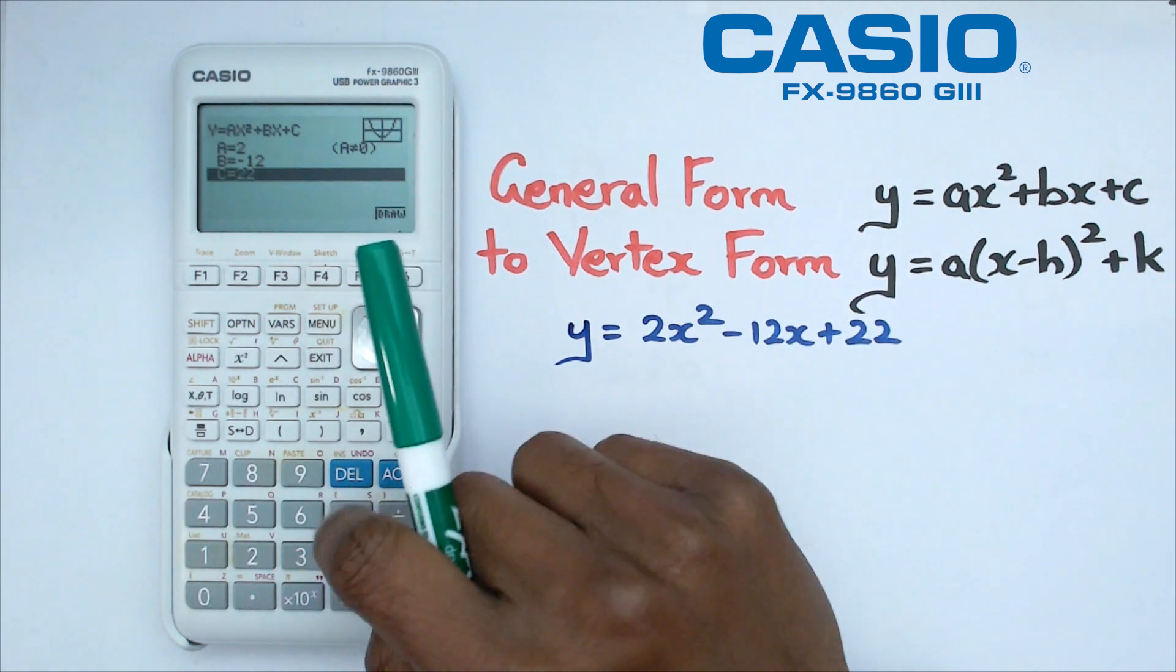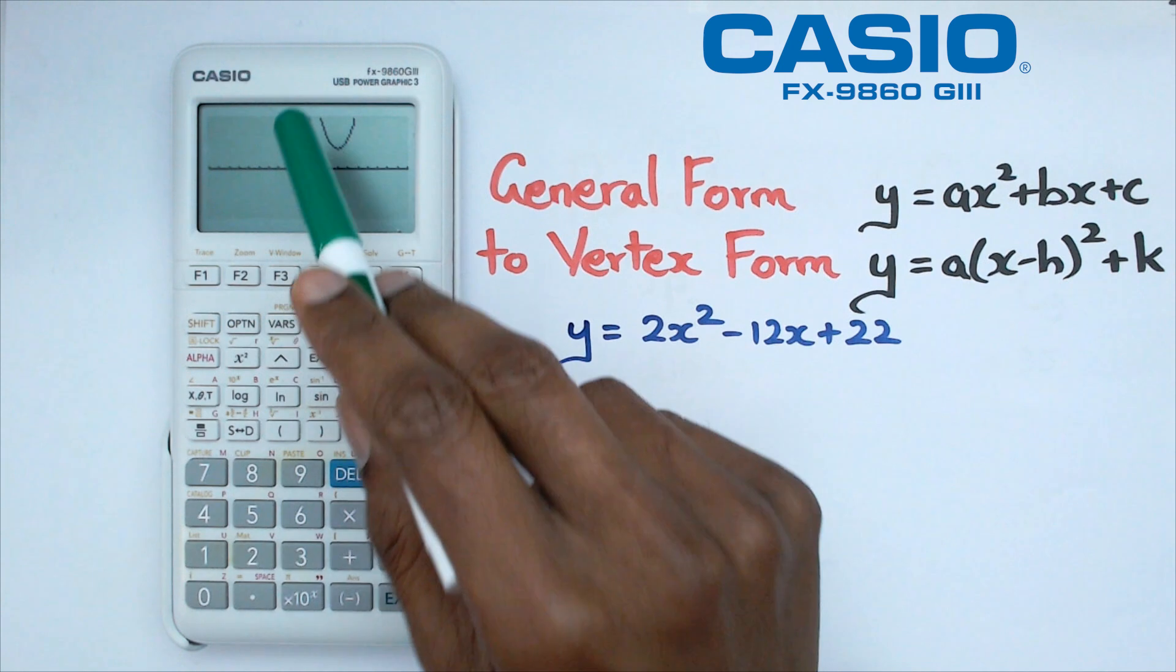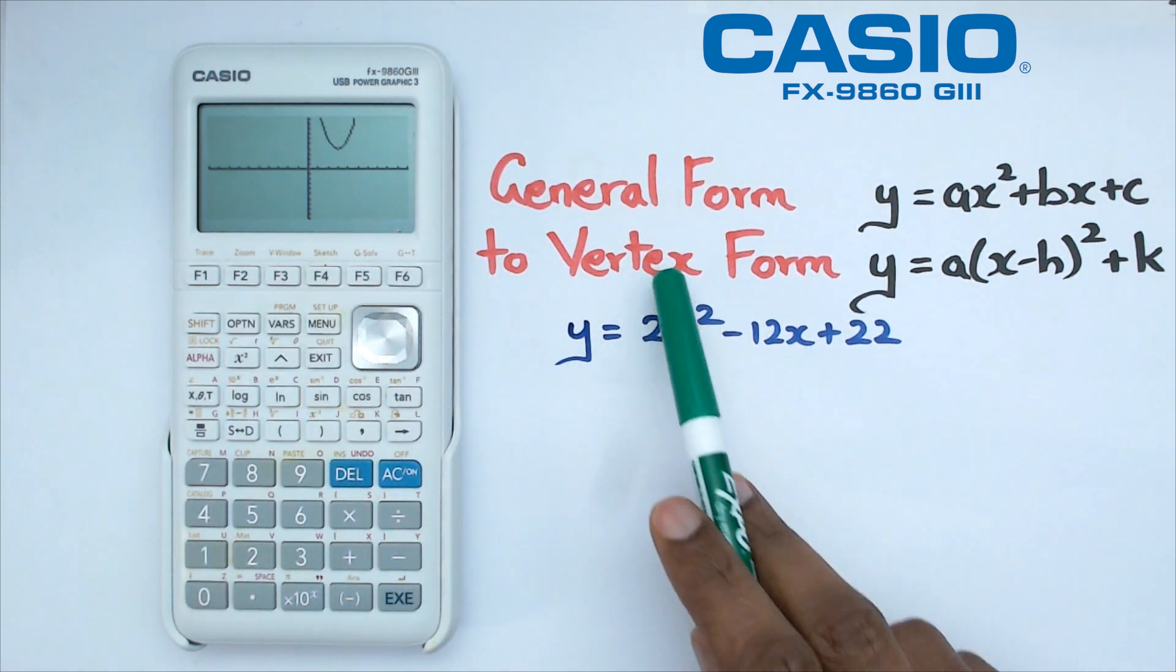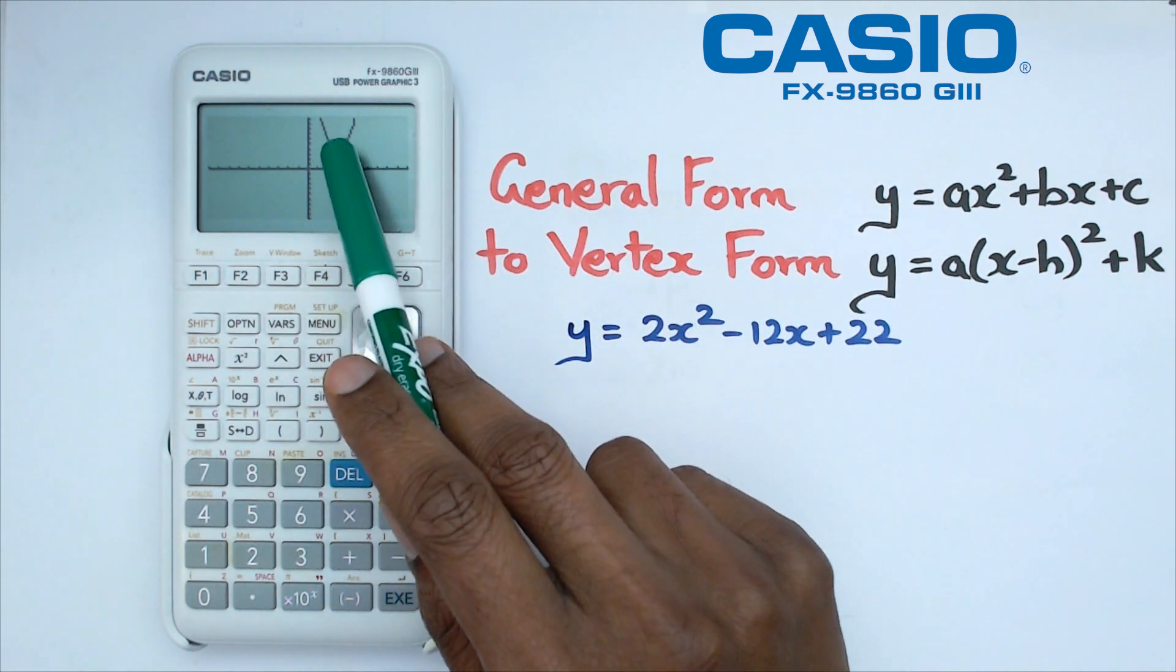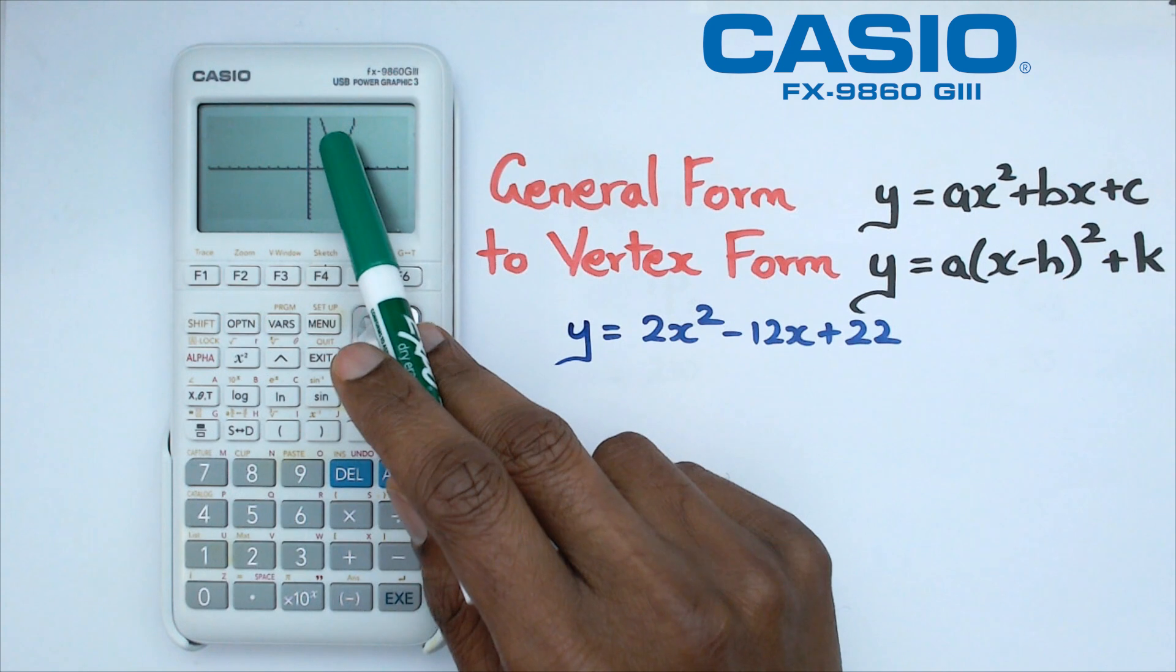Once we click on that what we can do is we can click on draw and here is our graph right now. Now to do the vertex form what we need is the actual vertex point here, so that's the point also known as the turning point in this case for the parabola.